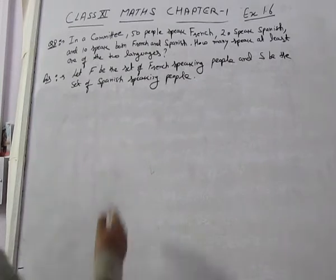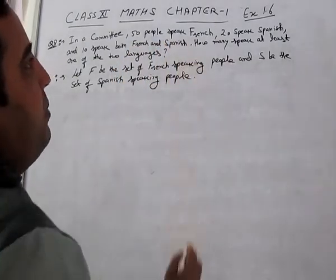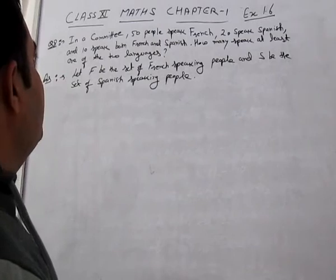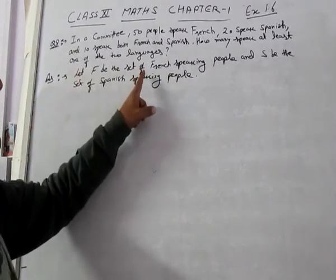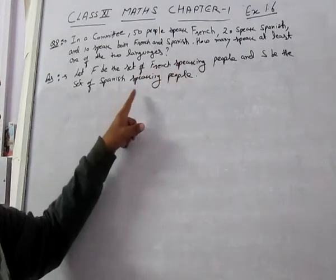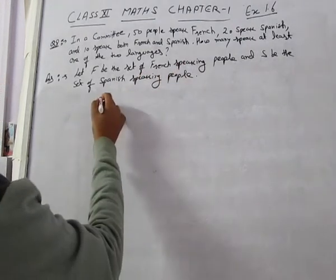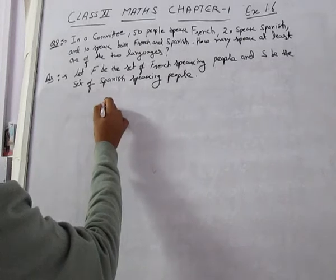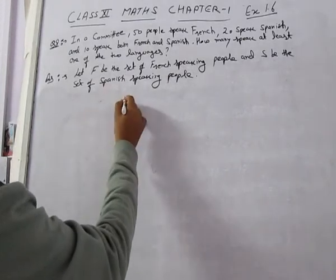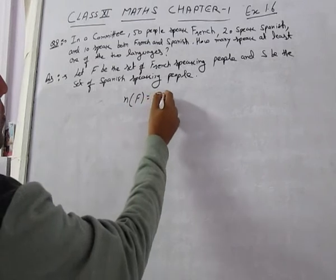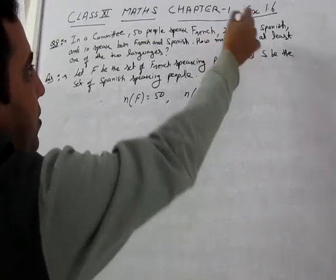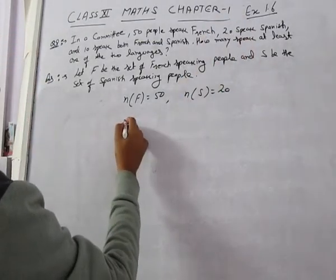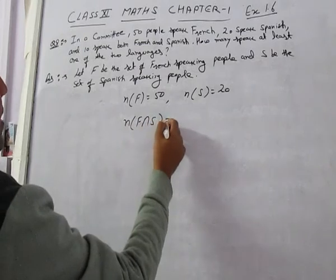Question number 8. In a committee, 50 people speak French, 20 people speak Spanish, and 10 people speak both French and Spanish. How many speak at least one of the two languages? Let F be the set of French-speaking people and S be the set of Spanish-speaking people. Then n(F) = 50, n(S) = 20, n(F∩S) = 10.